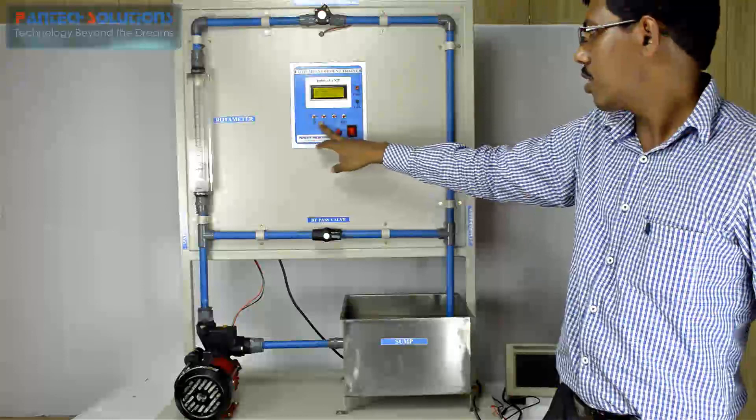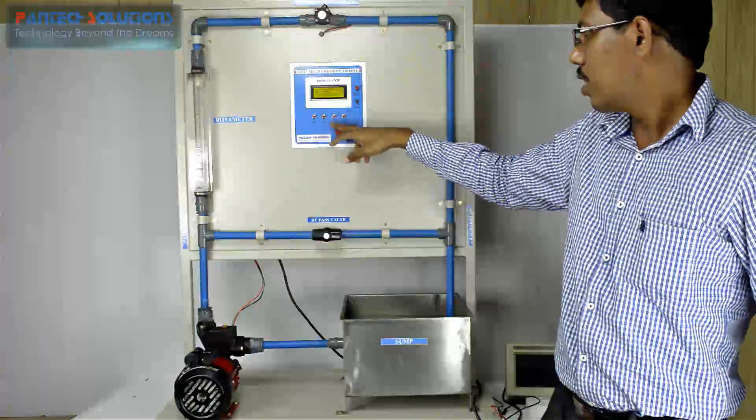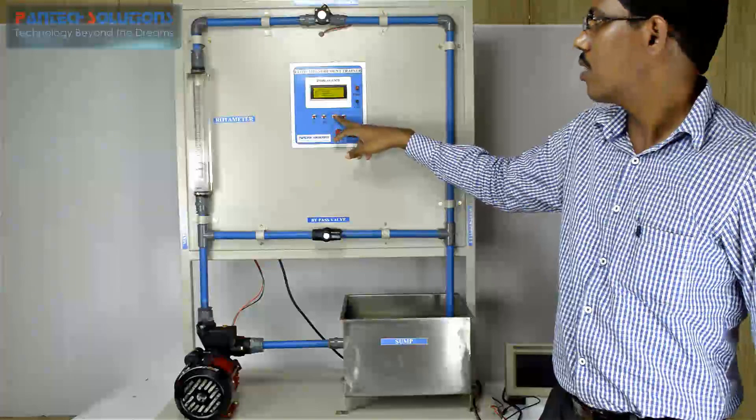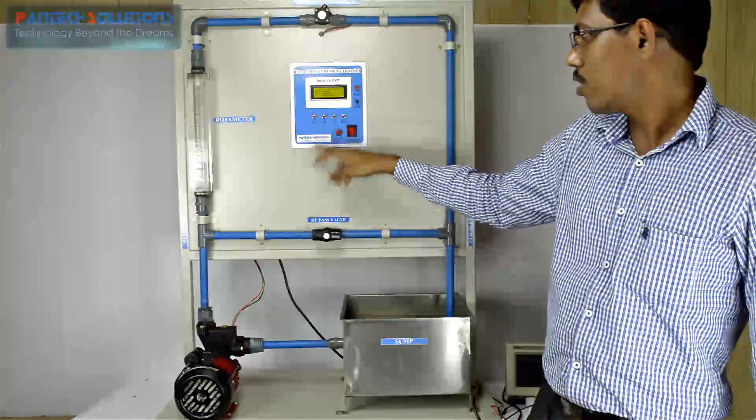This S1 switch and S2 switch is for the increment and decrement of the set liter, and the S3 is going to act as an enter switch. After this switch press, the motor is going to start.